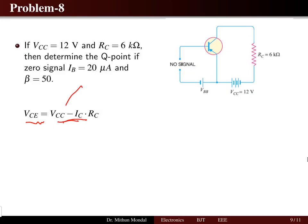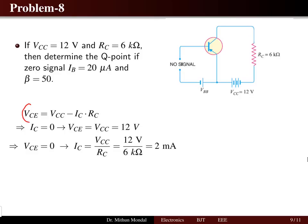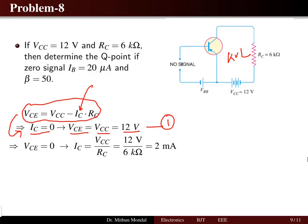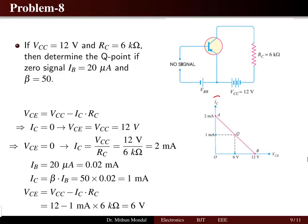Applying KVL in the output loop with passive sign convention: collector-to-emitter voltage equals VCC minus IC times RC. Setting collector current to zero gives VCE equal to VCC equal to 12 volts — this is the cutoff point. Setting collector-to-emitter voltage to zero gives collector current equal to 2 milliamps — this is the saturation point. These two points, 12 volts and 2 milliamps, define the load line on the curve of collector current versus collector-to-emitter voltage.